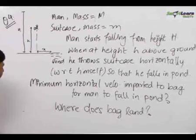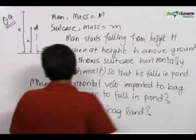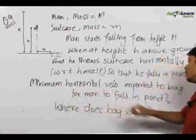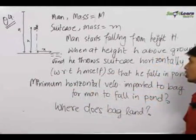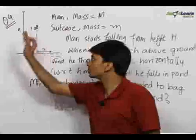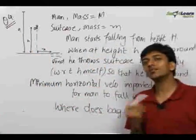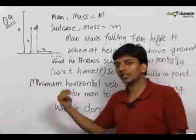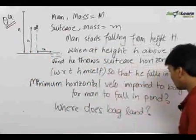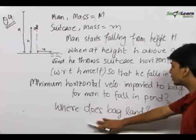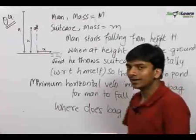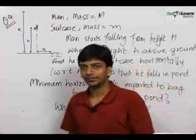The question is: with what minimum horizontal velocity should he throw the bag with respect to himself on the other side, so that he himself falls in the pond? The second part of the question is: where does the bag land?